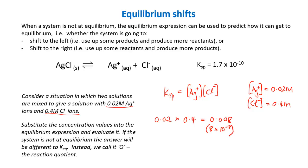We go: concentration of silver is 0.02, and concentration of chloride is 0.4. The Ksp expression tells us to multiply those two things together, and when you do that, you get a value of 0.008, or in scientific notation, 8 times 10 to the minus 3. This value is clearly different from the Ksp of 1.7 times 10 to the minus 10, which immediately tells us that this system is not at equilibrium — because if it were at equilibrium, those two concentrations should multiply together to give the Ksp.